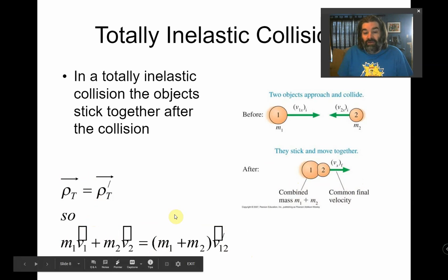That the first object times its velocity plus the second mass of the object times its velocity is their combined mass times the new velocity that they both have together. So you can simplify to that. That's what we refer to as totally inelastic.